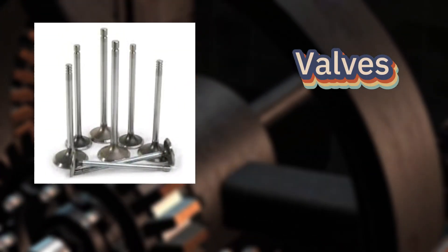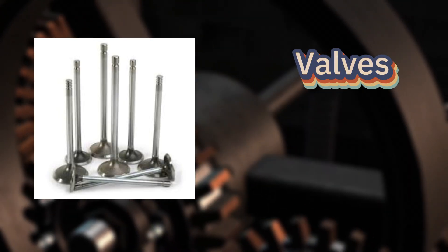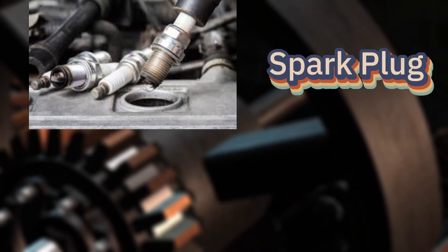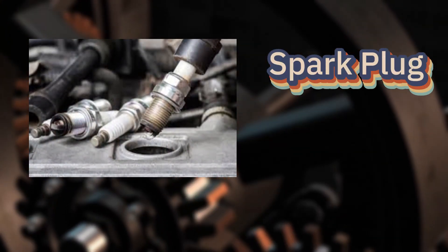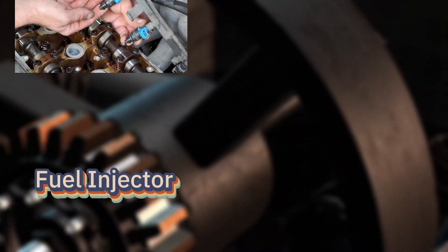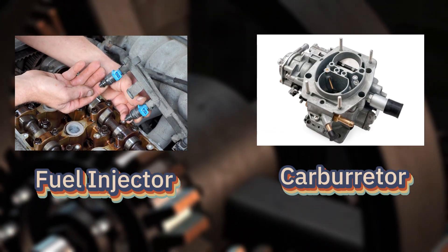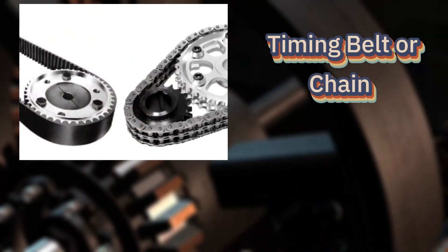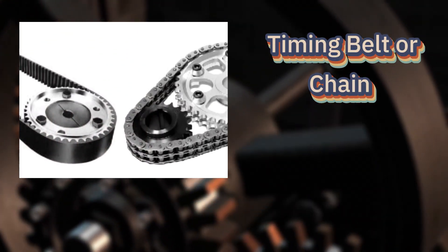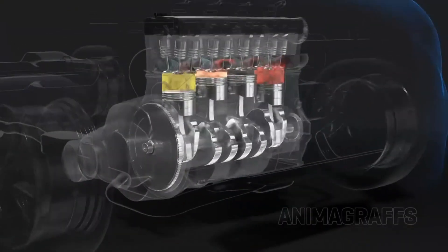Valves, control the flow of air-fuel mixture and exhaust gases. Spark plug, ignites the air-fuel mixture in petrol engines. Fuel injector or carburetor, delivers fuel into the combustory chamber. Timing belt or chain, synchronizes the movement of crankshaft and camshaft. Now that we know the team, let's see them in action.